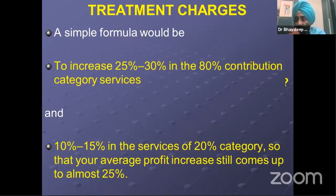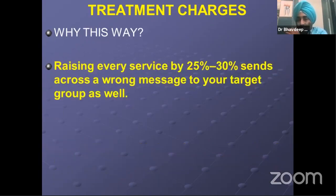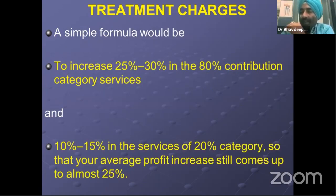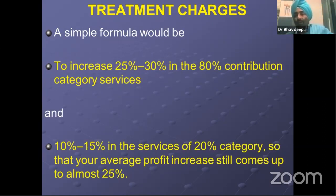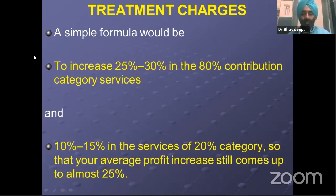Apply the annual usual increase — if not done this January — of 10 to 15% in those 20%-contribution category services, so that your average profit still increases by close to 25%. If we take the average of 25 to 30%, it is 27.5%. The average of 10 to 15% is 12.5%. Taking the proportionate effect: 27.5% on the 80% of services comes to roughly 22%, and 12.5% on the 20% comes to 2.5%. Adding 22 plus 2.5 gives close to 24.5% — roughly a 25% overall increase in revenue.